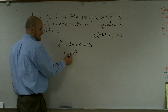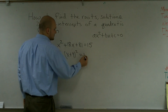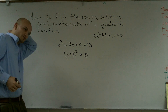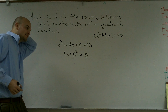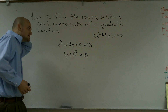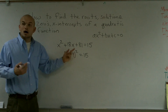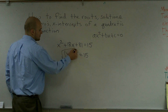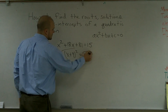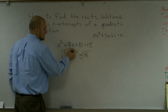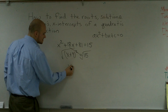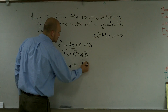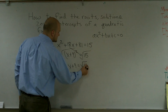So now I have x plus 9 squared equals 15. This is not going to be an easy factoring problem, because to get rid of the square — to undo squaring — I take the square root. Those cancel out, so I have x plus 9 equals the square root of 15.